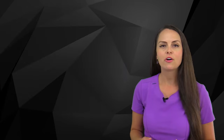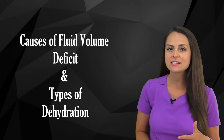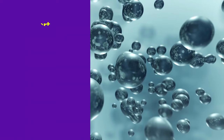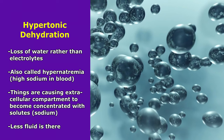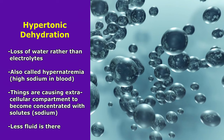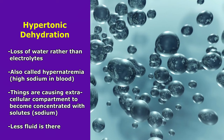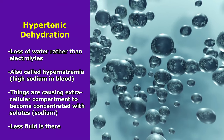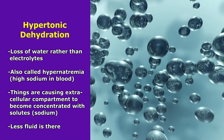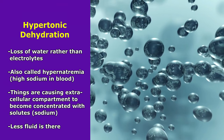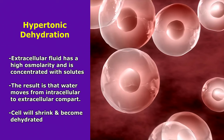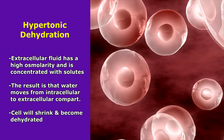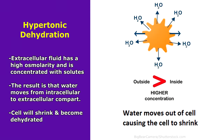With those concepts in mind, let's look at the causes of fluid volume deficit and the different types of dehydration. The first is hypertonic dehydration, where there's mainly a loss of water rather than electrolytes — specifically sodium — also referred to as hypernatremia, meaning high sodium in the blood. The extracellular compartment becomes highly concentrated with solutes, so water moves from the intracellular to the extracellular compartment and the cell shrinks and becomes dehydrated.